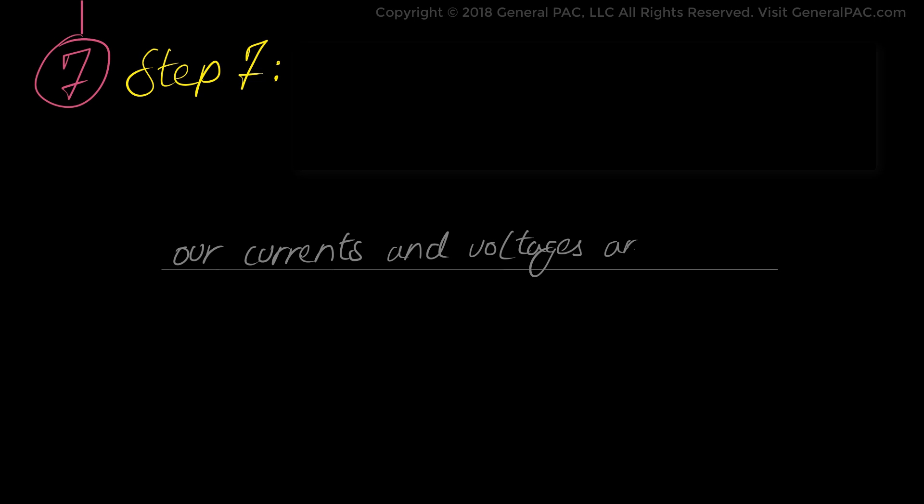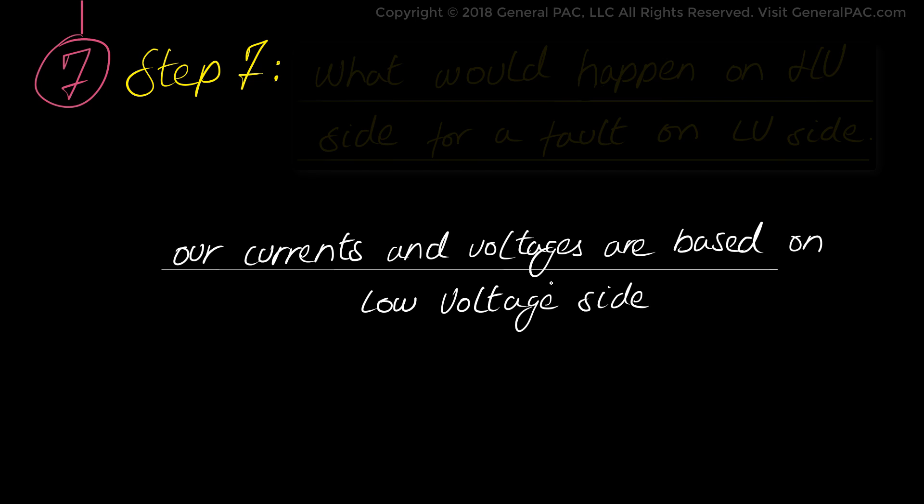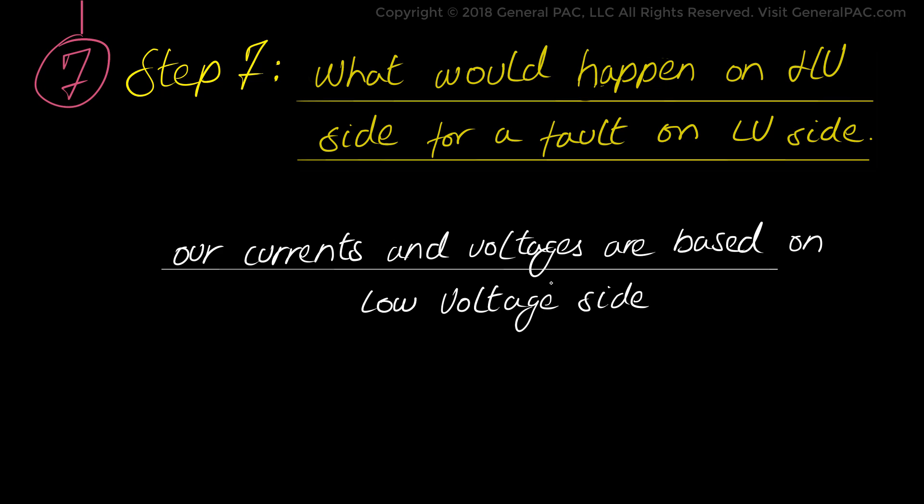Now in step 7, the 7th step, this step can actually be skipped. And we are calculating the fault that occurs on the low voltage side of the transformer. All of our current and voltage calculated quantities are based off the low voltage side. Now if we wanted to analyze what would happen on the high voltage side of the transformer, for a fault that occurs on the low voltage side, this requires a very special step.